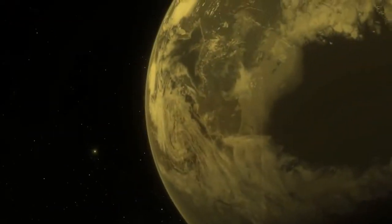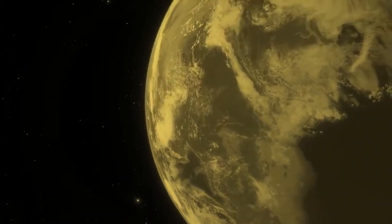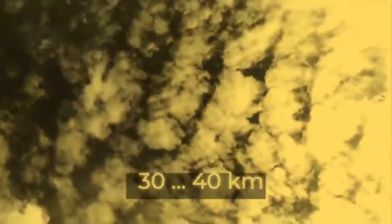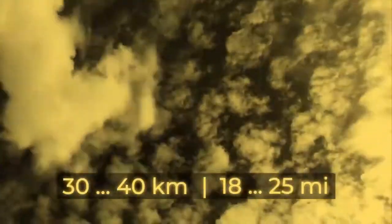On June 30, 1908, our civilization could have perished. On this day, a huge cosmic body entered the Earth's atmosphere, collapsed due to high pressure and temperature, and exploded at an altitude of between 30 to 40 kilometers, or 18 to 25 miles.